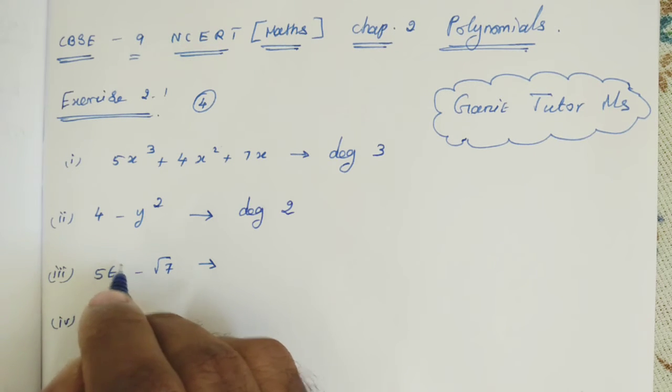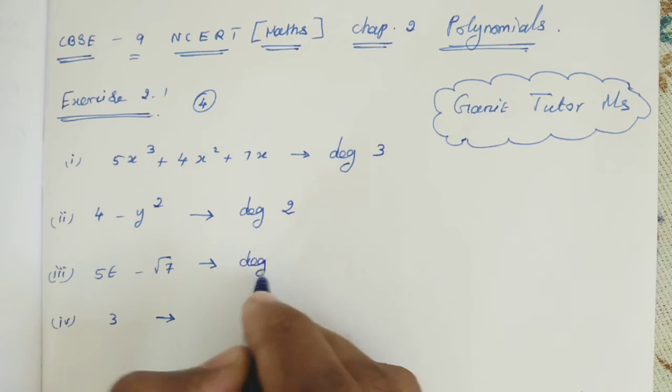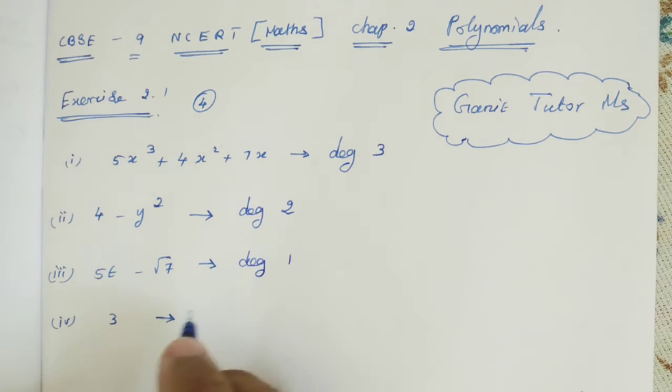Here 5t minus √7. T power 1, here t power 0. So degree 1.